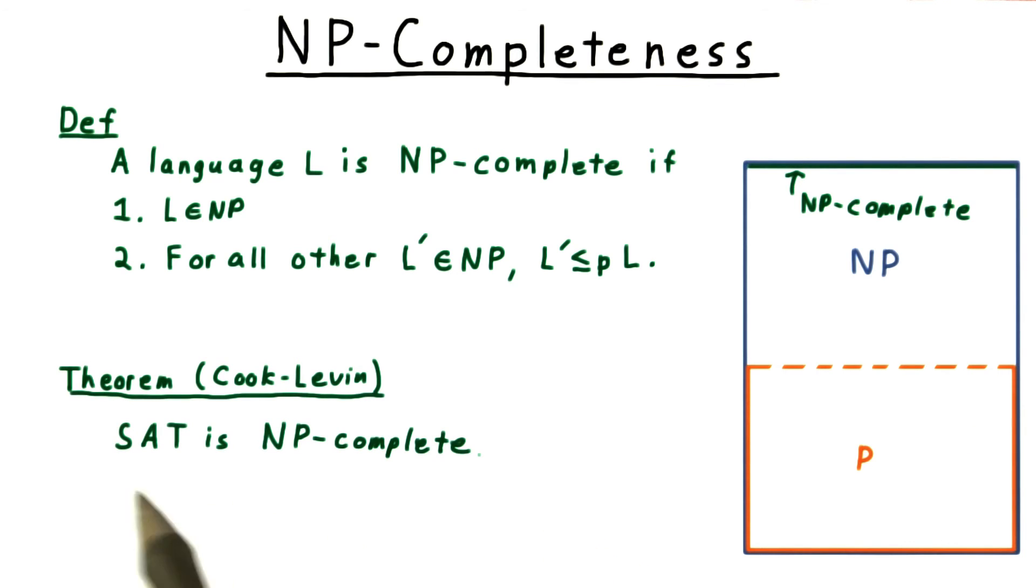the first natural problem to be proved NP complete is Boolean Formula Satisfiability, or SAT for short. This was shown to be NP complete by Stephen Cook in 1971, and independently by Leonid Levin in the Soviet Union around the same time.